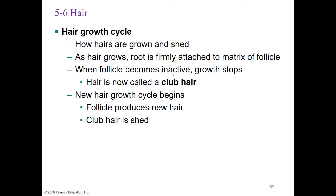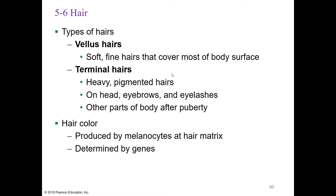As hair grows, the root is firmly attached to the matrix of the follicle. When the follicle becomes inactive, growth stops and hair is called a club hair. When a new growth cycle begins, the follicle produces a new hair and the club hair is pushed out or shed. There are two types of hair: vellus hair, which is soft, fine, and colorless—like peach fuzz on the face, neck, chest, and back; and terminal hair, which is heavily pigmented, found on the head, eyebrows, eyelashes, and other parts of the body after puberty. Hair color is produced by melanocytes at the hair matrix and is determined by your genes.